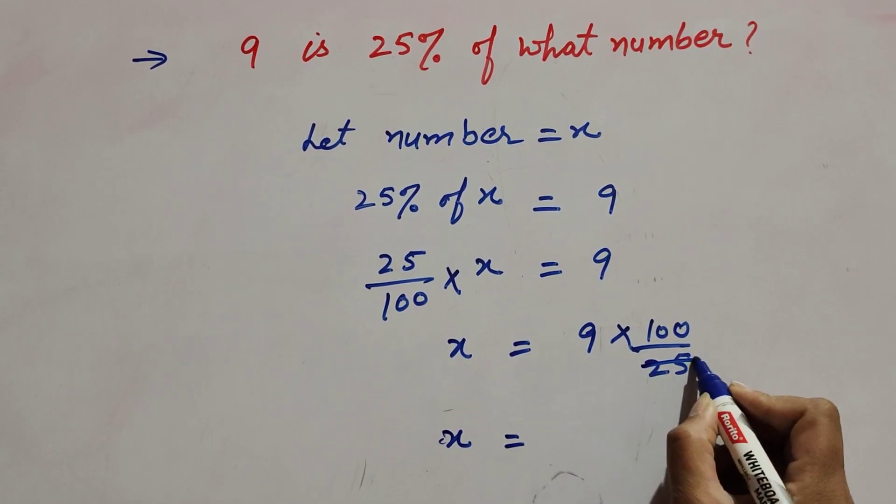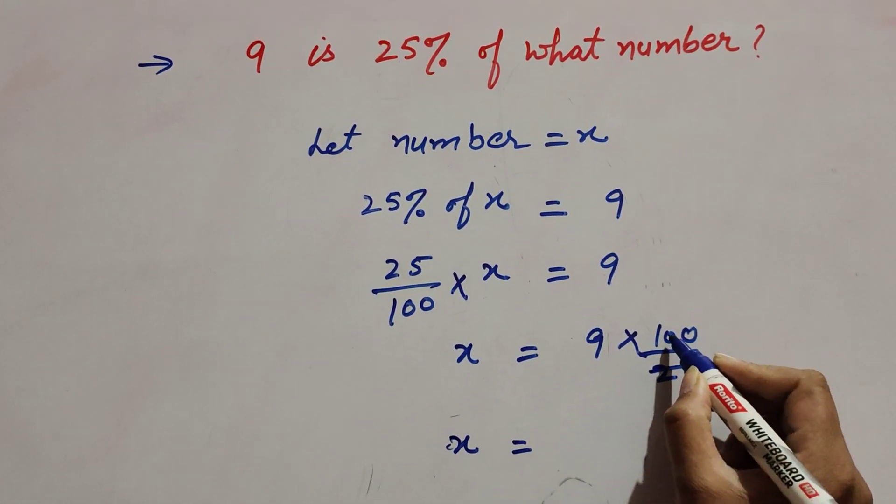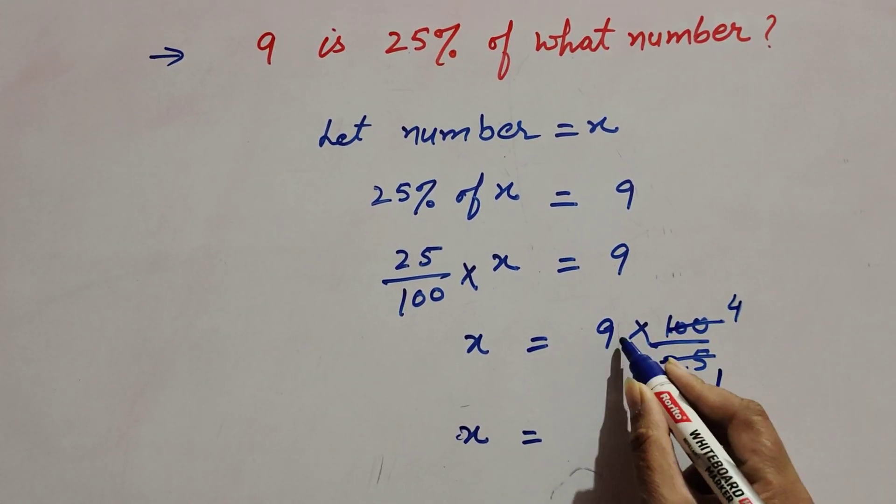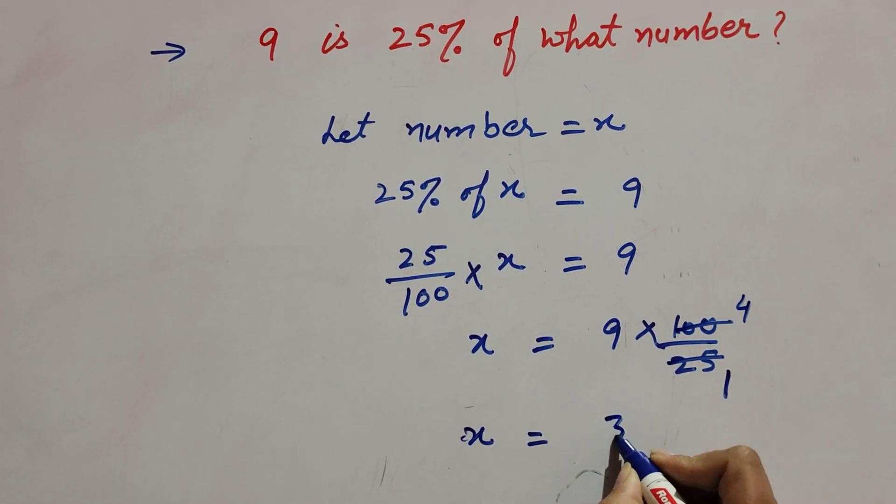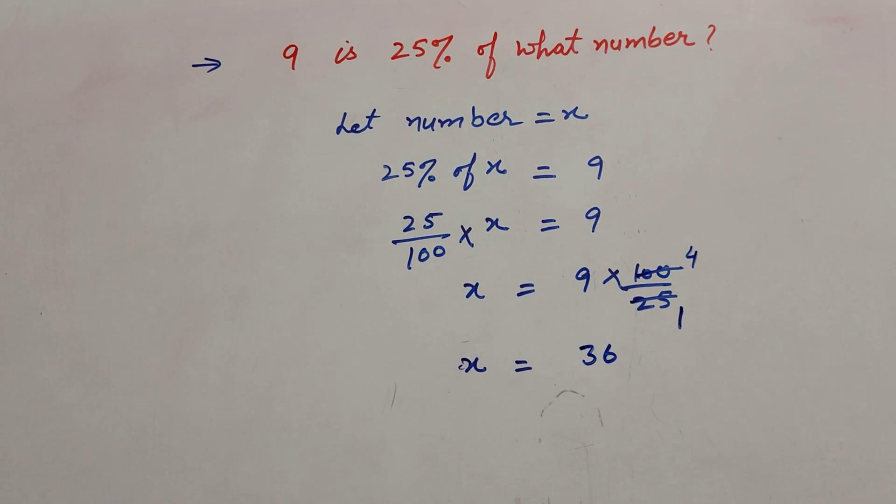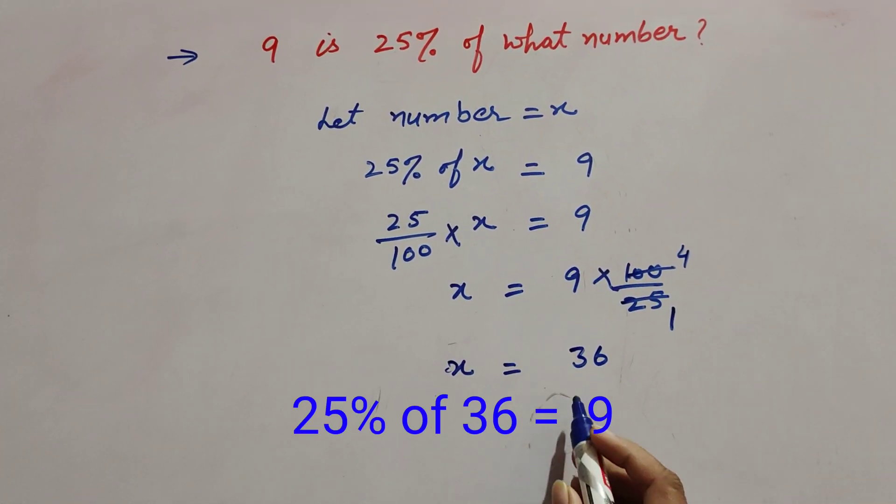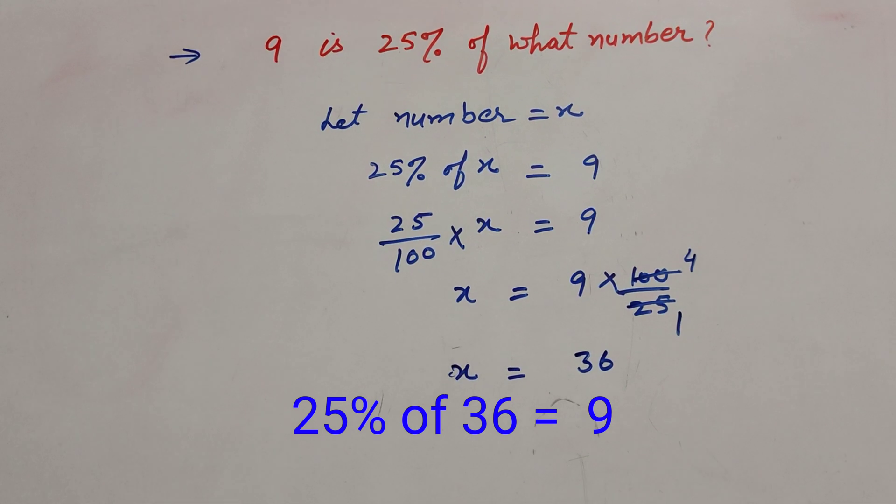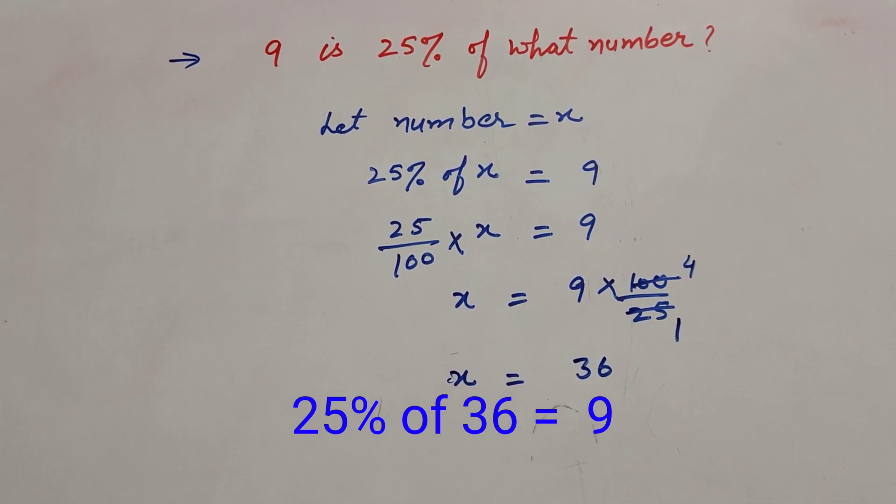100 and 25 both are divisible. 100 divided by 25 is 4, so 9 multiply by 4 equals 36. So x is equal to 36. Therefore, 25 percent of 36 is equal to 9.